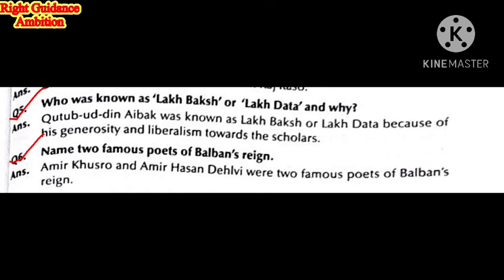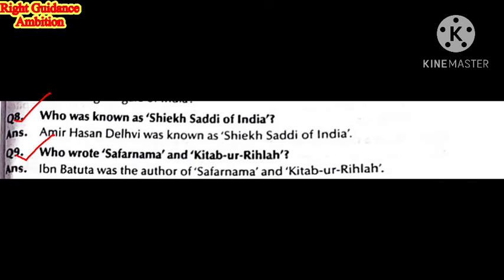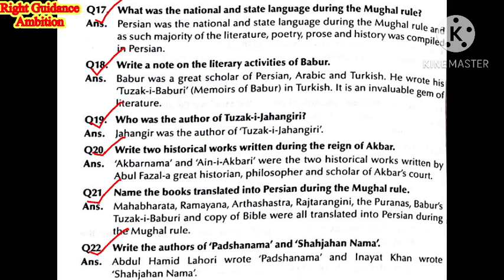Name the two famous poets of Balban's reign: Ameer Khusro and Ameer Hasan Dehlvi. Who was known as the Sheikh Sadi of India? Ameer Hasan Dehlvi. Who wrote Safar Nama and Kitab-ur-Rehla? Ibn Battuta. What was the national and state language during Mughal rule? Persian.